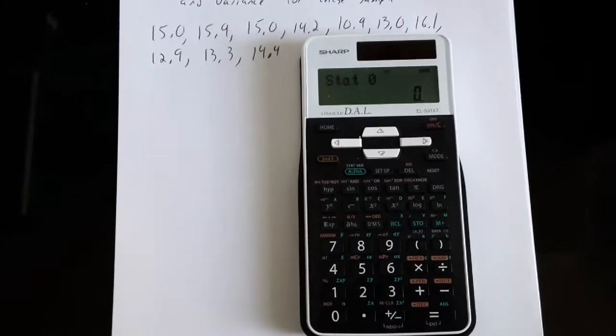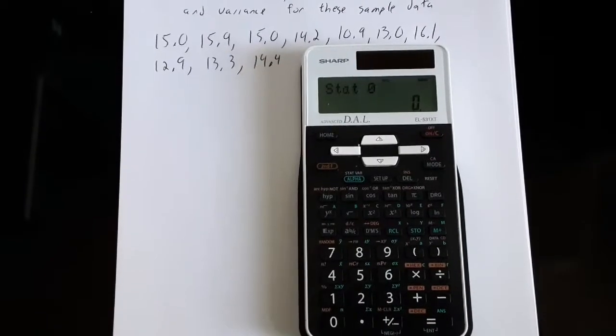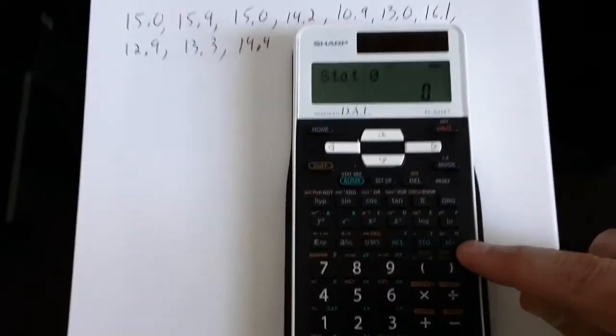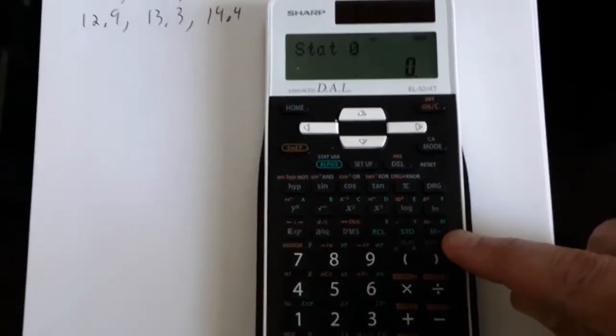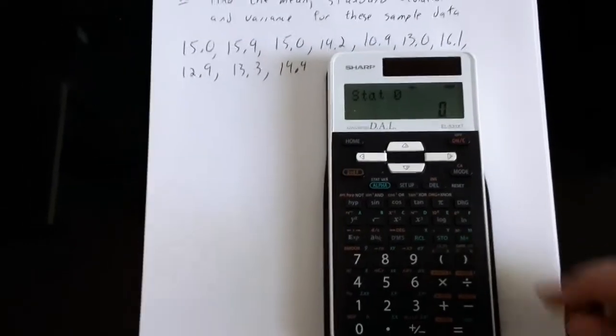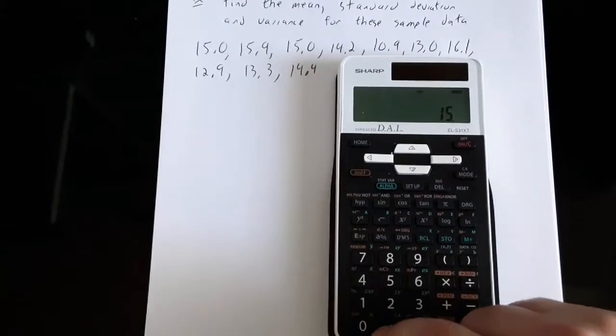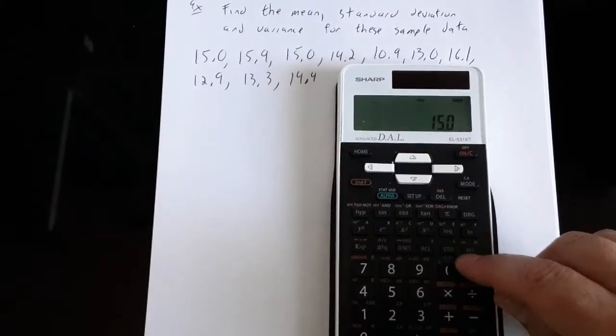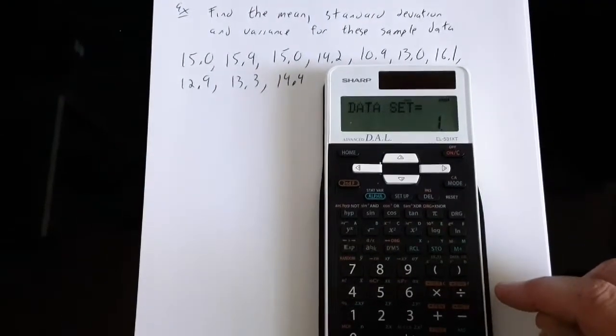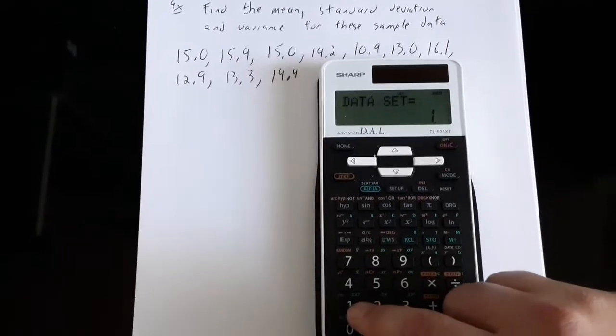So the first thing that we need to learn to do after we put ourselves in stats mode is how to enter data. And the enter key for data is the button M plus that lives right here in the corner. Every time I want to enter an observation or measurement, I'll touch the M plus button afterwards. So the first observation, 15.0, and I'll touch M plus. And then it now says data set equals 1. This is a confirmation of how many things my calculator has in its memory.